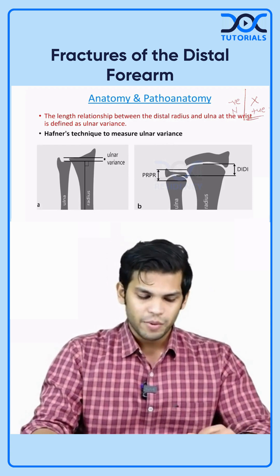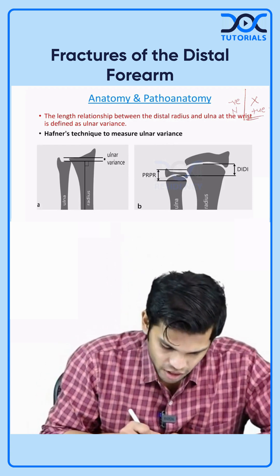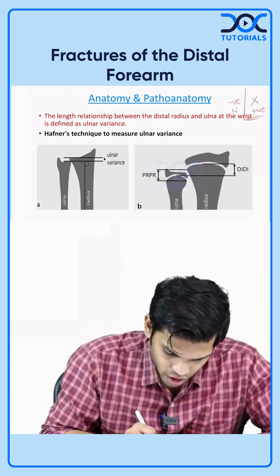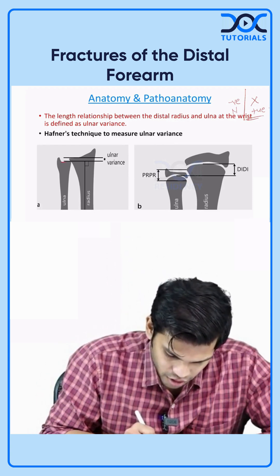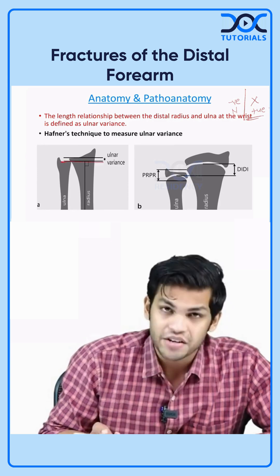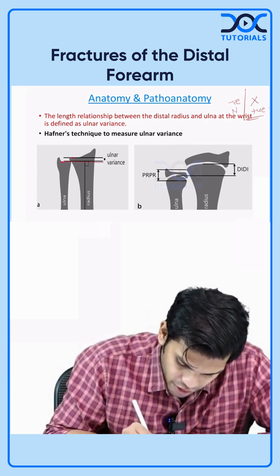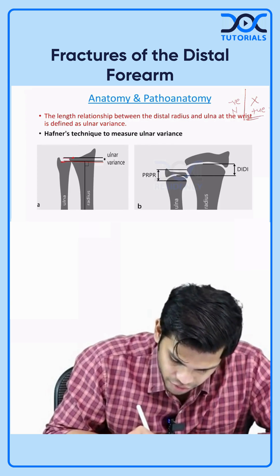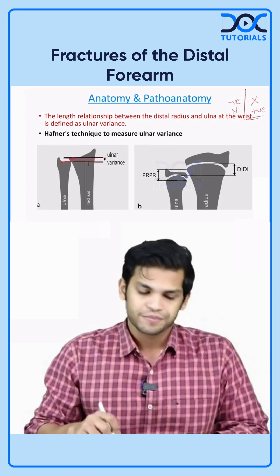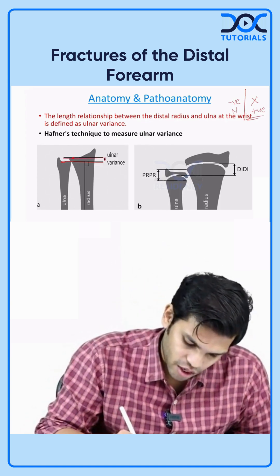How do you measure this ulnar variance? The simplest method is draw a line from the ulnar articular surface towards the radius. Second line from the ulnar aspect of the radial articular surface parallel to the first line. This distance will give you the ulnar variance.